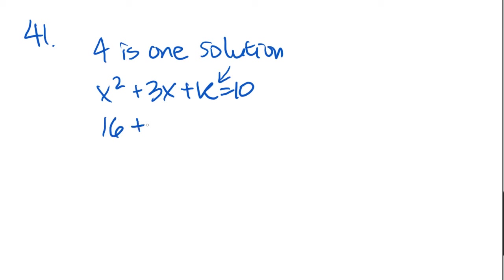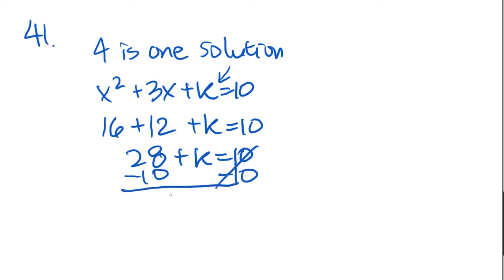41 says if 4 is the solution, is one solution, of the equation x squared plus 3x plus k equals 10, where k is the constant, what is the other solution? First thing we want to do is solve for the k. So let's plug the 4 in everywhere we see x. So 4 times 4 is 16, plus 3 times 4 is 12, plus k equals 10. Add these together, and you get 28 plus k equals 10. Subtract 10. And you get 18 plus k equals 0. k equals negative 18.